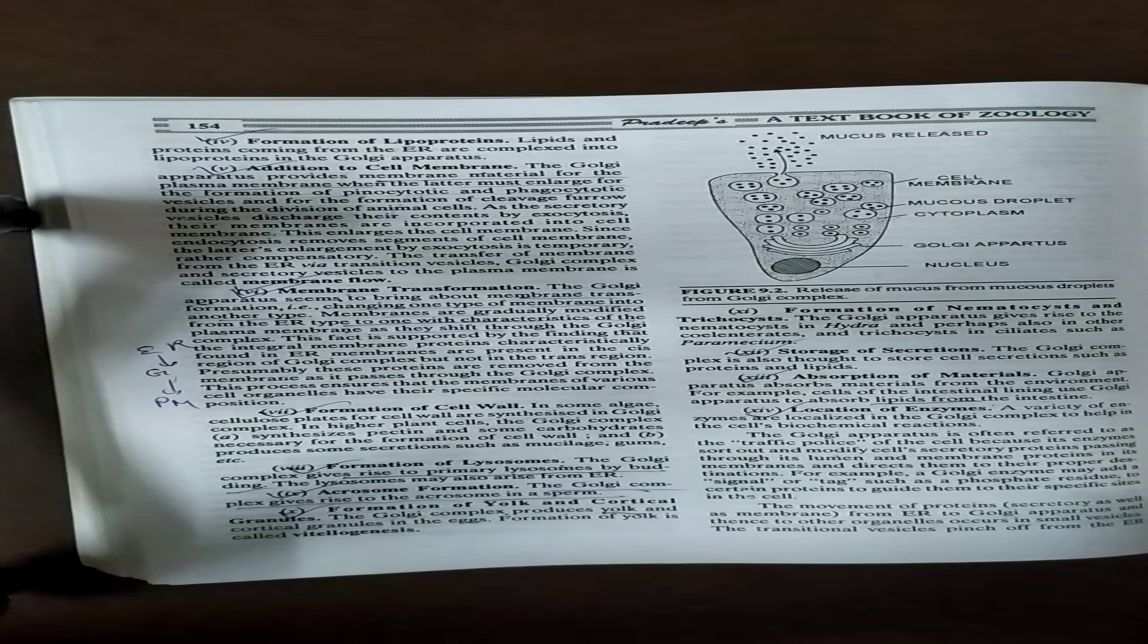Addition to cell membrane. When the cell membrane is extended to its limit or shrink, what do they do with the Golgi bodies? Because the plasma membrane and the cell membrane is structurally similar.